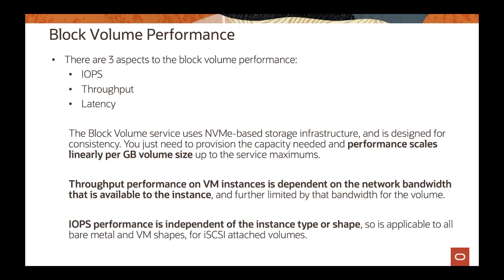In terms of block volume performance, you can measure performance around IOPS, throughput, and latency — those are the three aspects measured against the block volume. The block volume scales linearly per gigabyte of storage, meaning if you increase the size of your storage, you get better performance. If you deploy a 50 gigabyte volume, you won't get the same performance as a one terabyte volume — one terabyte will give you more performance than 50 gigabytes.